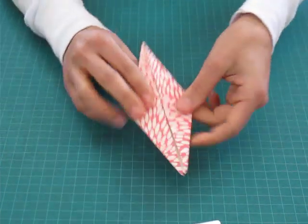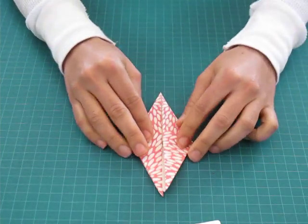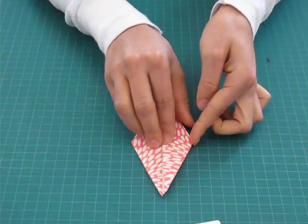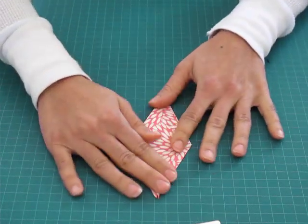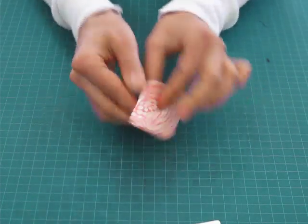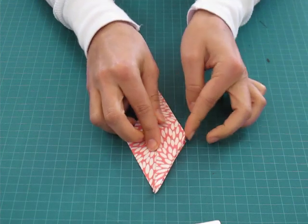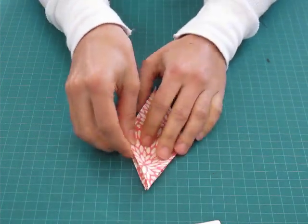So now take one of the side corners and flip it over like you're opening a book. You're going to flip your whole paper over and again you're going to take that corner and just open it up like a book.